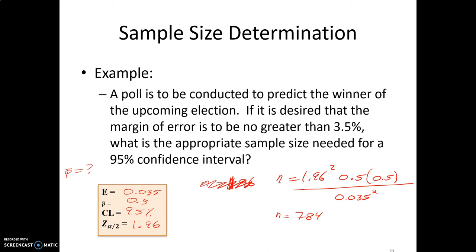So we now know how many people we need to call or talk to. If we talk to 784 people who will vote in the upcoming election, we will have a margin of error less than 3.5%. A smaller margin of error with a large degree of confidence is the best of both parts — we always want a high degree of confidence and a small margin of error.